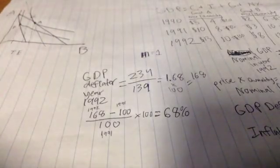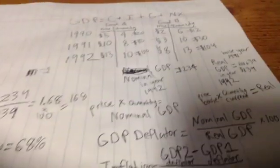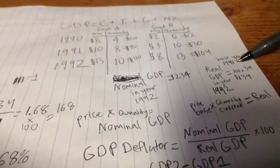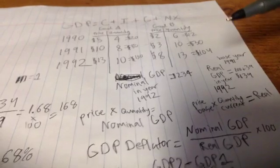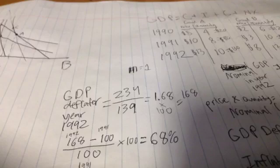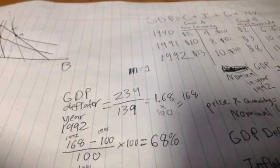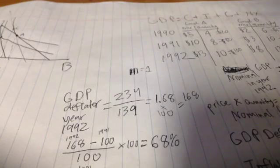Now, we know that you can calculate the GDP deflator in 1991 as well, but because we stated earlier that 1991 was our base year, the GDP deflator will be 100, because what it will be is the nominal GDP over the real GDP, which will be the same, times 100, which will be 100.